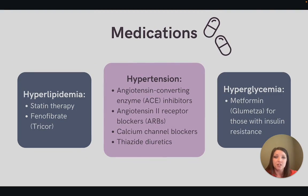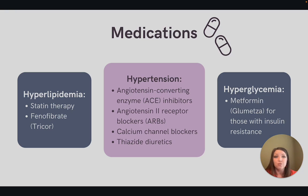If lifestyle modifications are not sufficient enough, we can treat the patient with first-line medications for the conditions leading to metabolic syndrome. For hypertension, we can use angiotensin converting enzyme or ACE inhibitors, angiotensin 2 receptor blockers (ARBs), calcium channel blockers, or thiazide diuretics. We can initiate statin therapy to help lower overall cholesterol, or something like fenofibrate or Tricor to help lower triglycerides specifically. Medications for blood glucose are typically initiated after diagnosis of diabetes; however, those with insulin resistance may benefit from starting metformin or Glumetza.